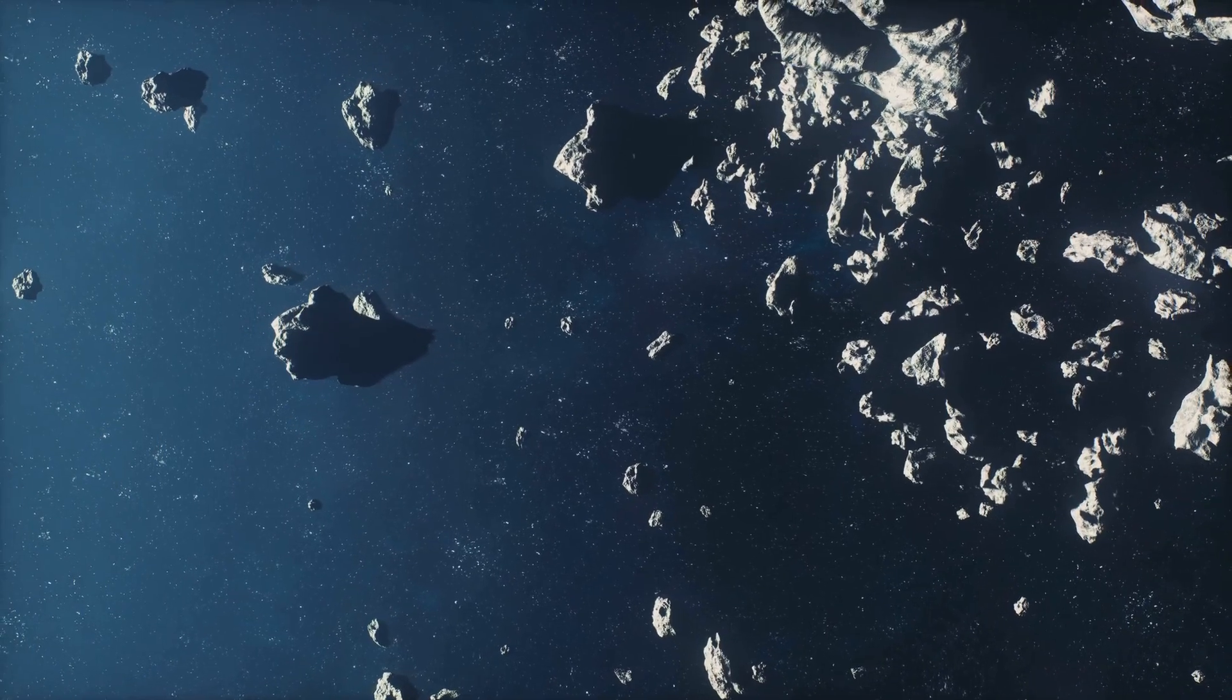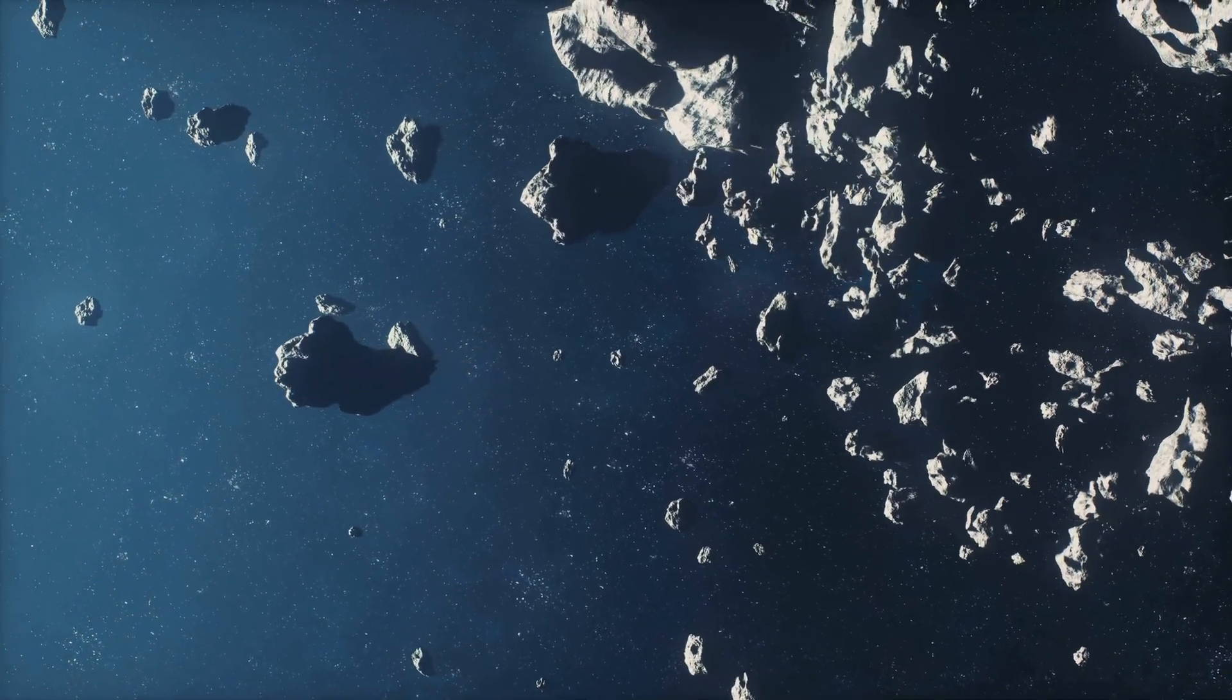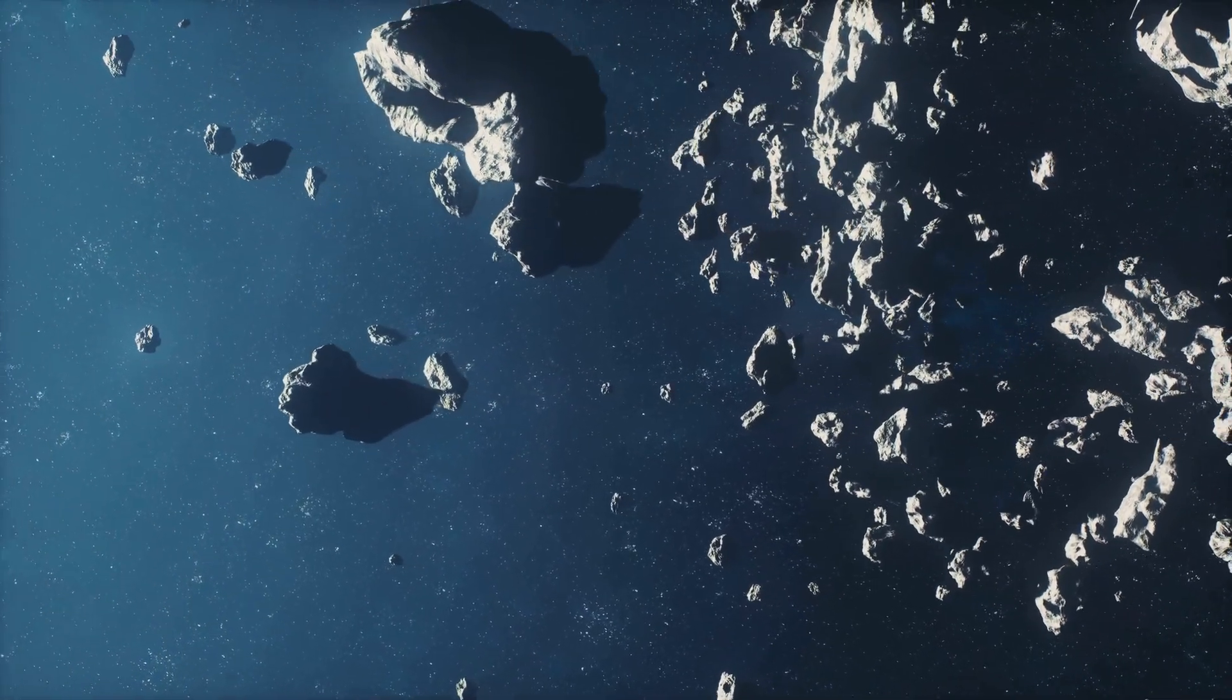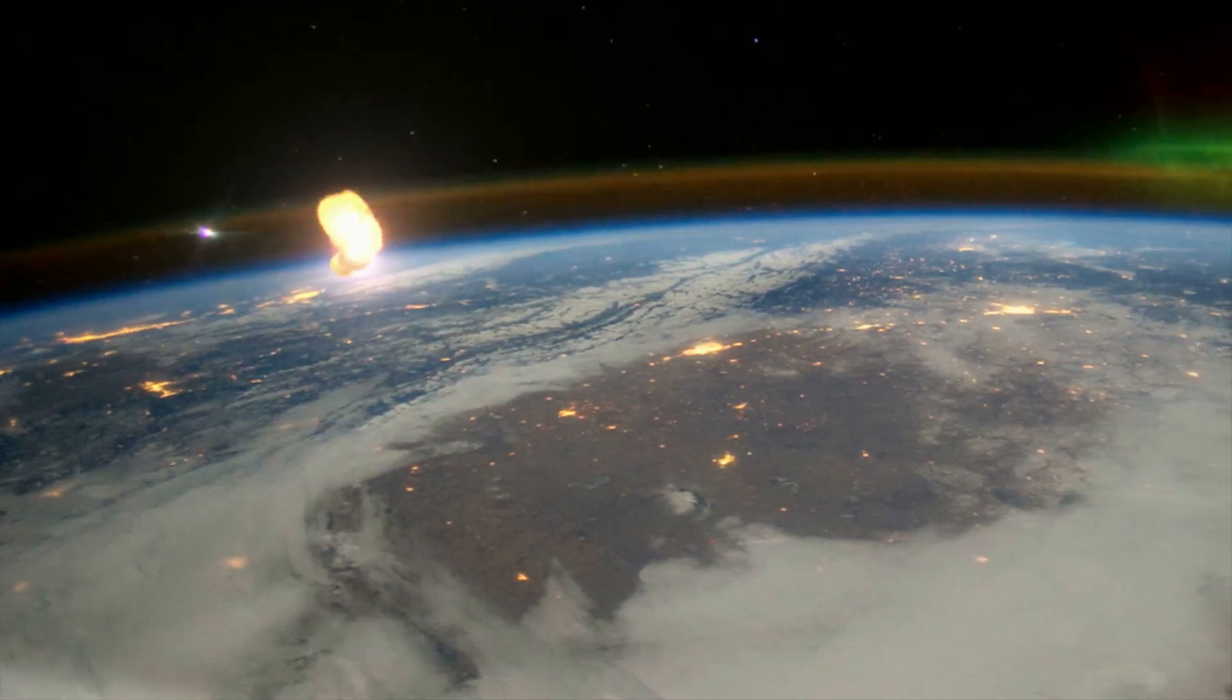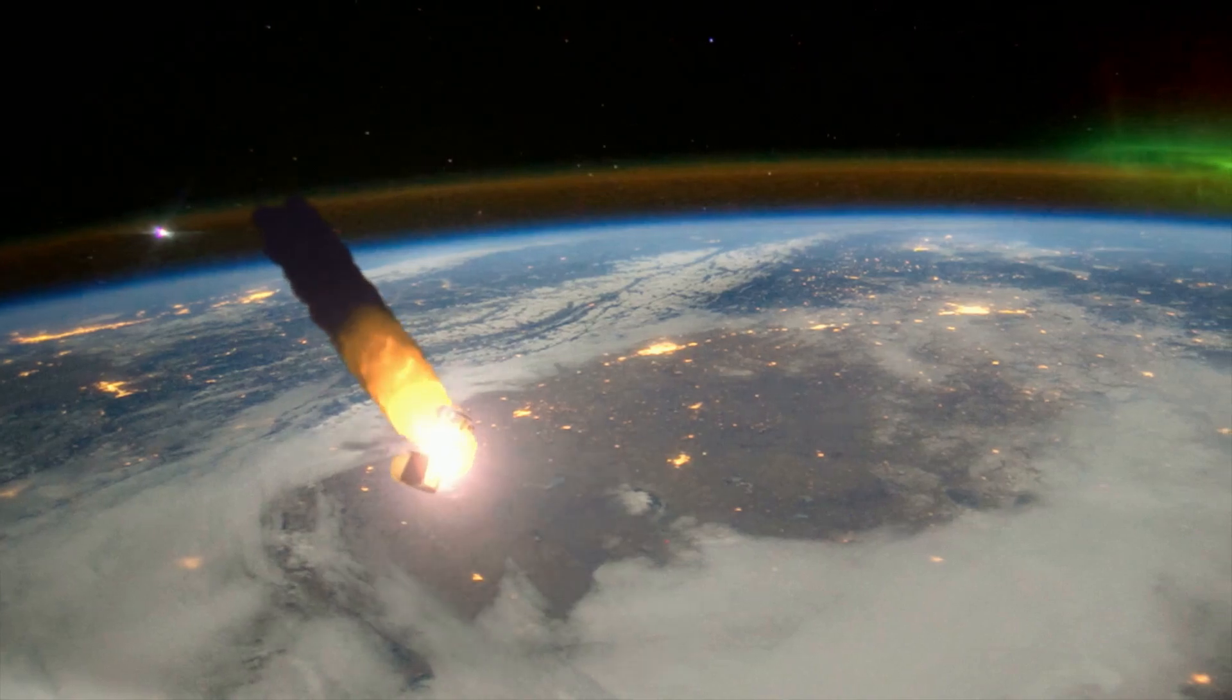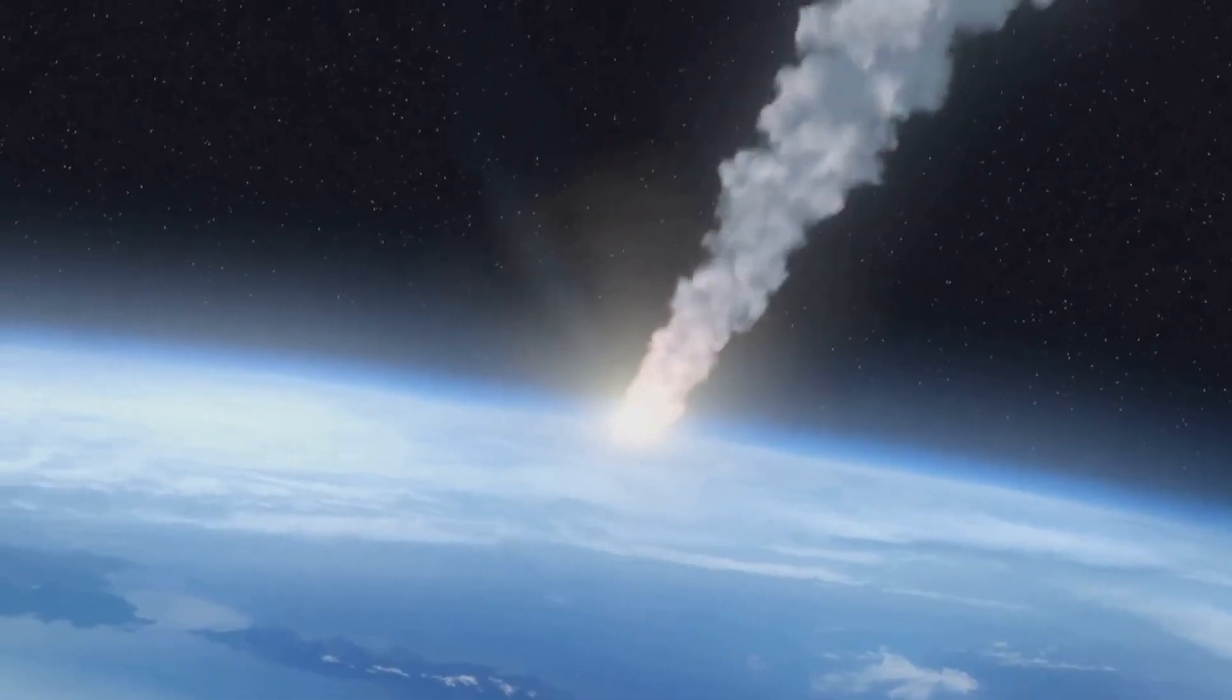NASA has been closely monitoring the skies and their advanced technology allows them to track asteroids with incredible precision. But the big question is, can we do anything to prevent a collision if 2007 FT3 decides to make an entrance?